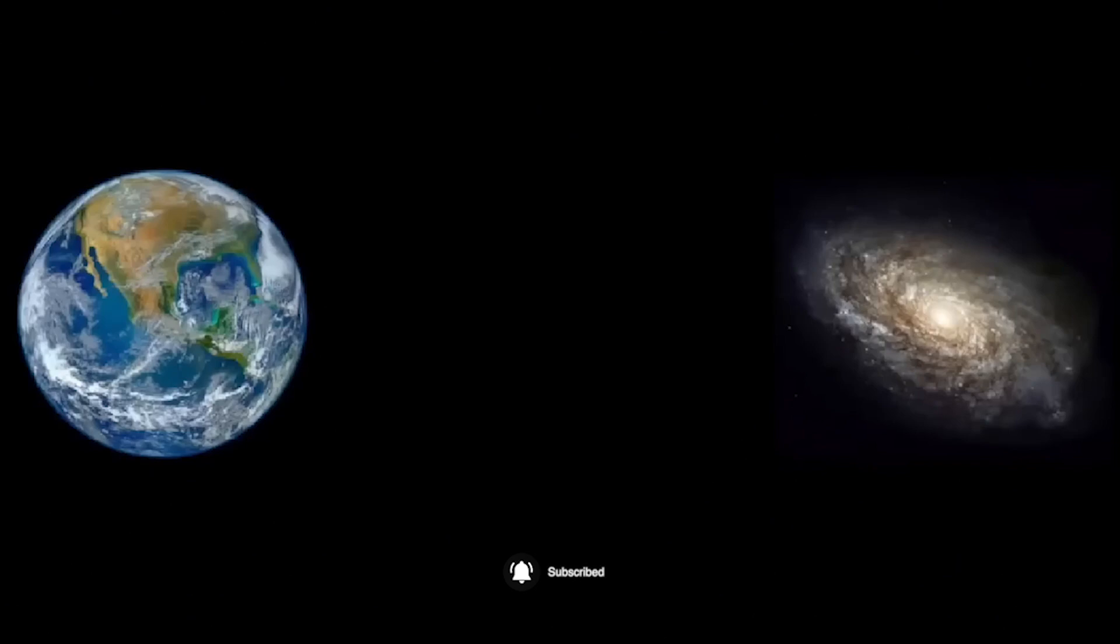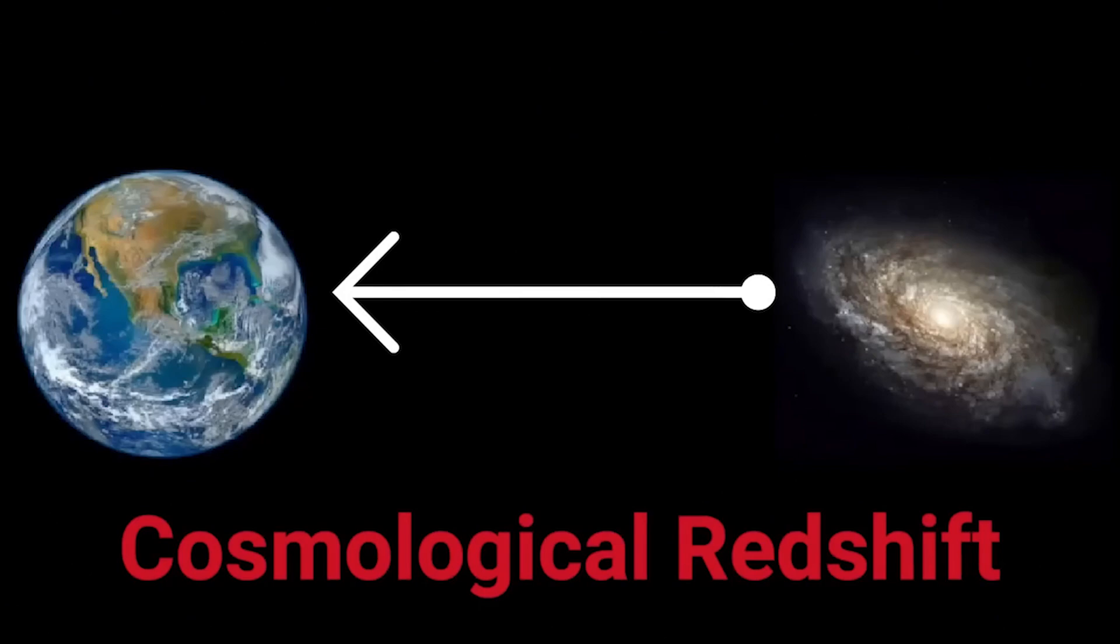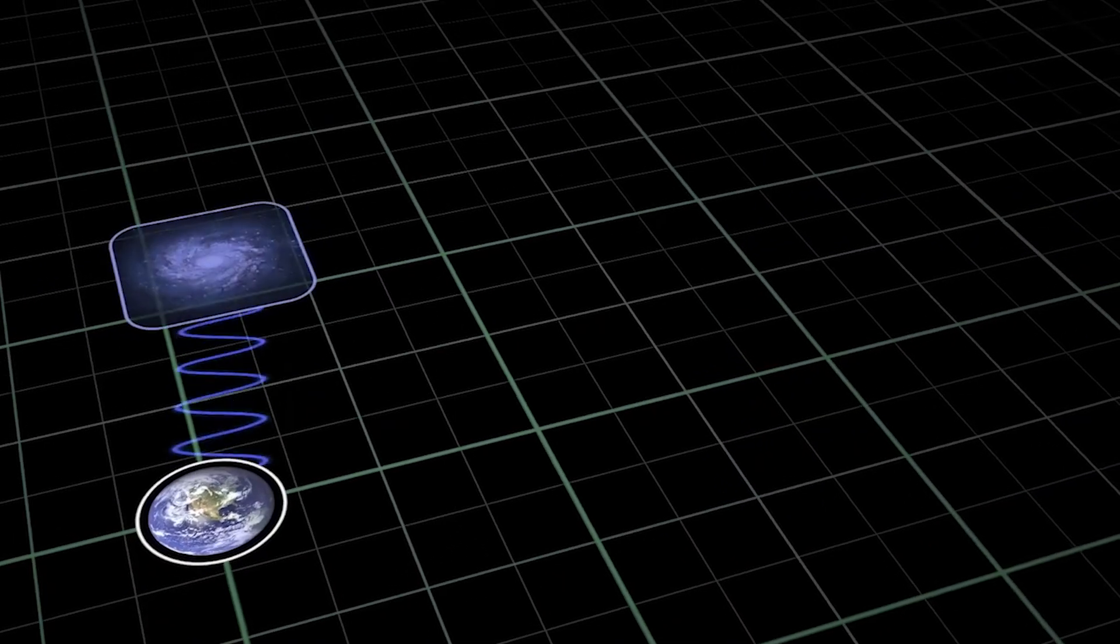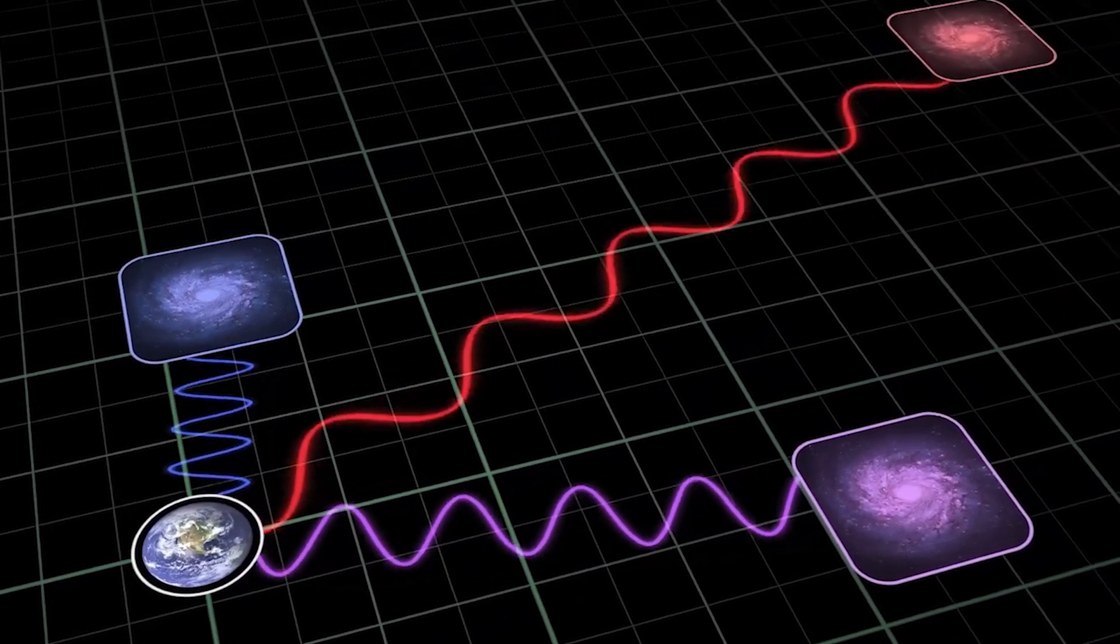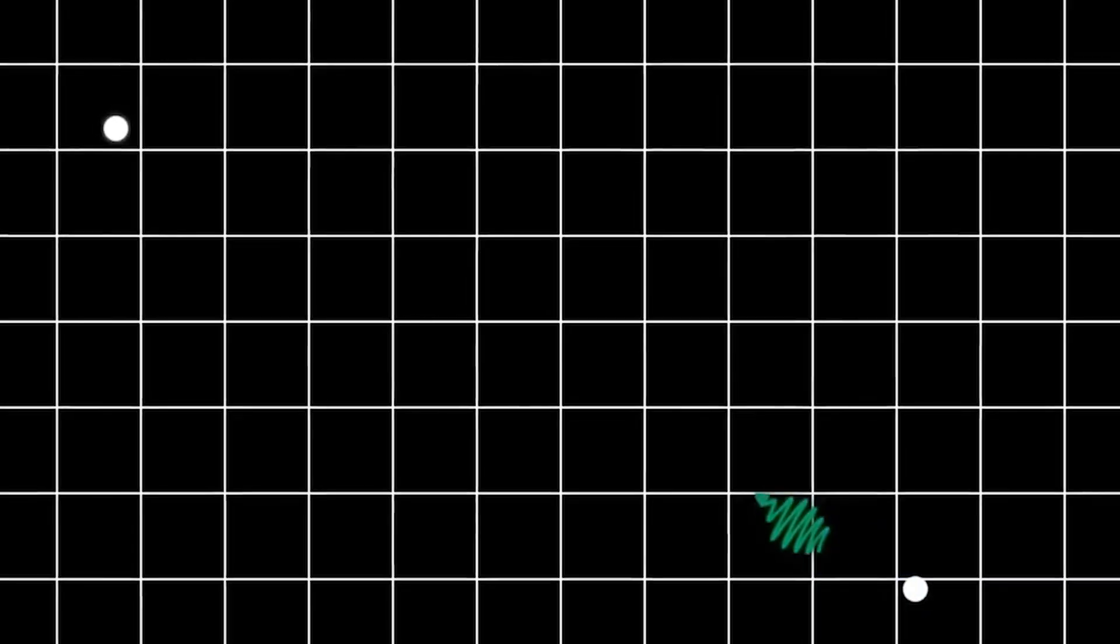To gauge a galaxy's distance, a metric known as cosmological redshift is employed. In essence, a higher redshift signifies a greater distance of a galaxy from us. However, there is a complication.